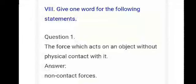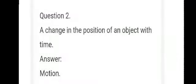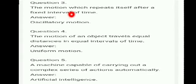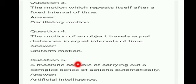Give one word for the following. Question one: the force which acts on an object with physical contact — answer: contact force. Question two: a change in the position of an object with time — answer: motion. Question three: the motion which repeats itself after a fixed interval of time — answer: oscillatory motion. Question four: motion where an object travels equal distance in equal intervals of time — answer: uniform motion. Question five: a machine capable of carrying out complex actions automatically — answer: artificial intelligence.